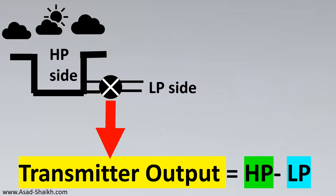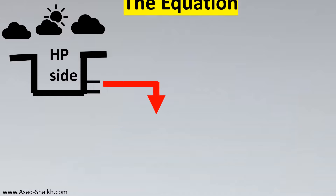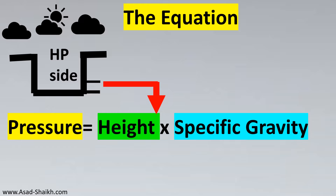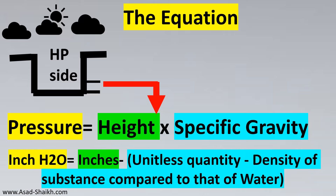Now we look into what equation we can use to calculate pressure. Pressure is equal to height multiplied by specific gravity. The pressure is in inches of H2O, the height is in inches, and specific gravity is a unitless quantity — it is simply the density of a substance compared to that of water. Multiplying by inches gives pressure in inches of H2O. Had the height been in mm, the output would have been in mmH2O.